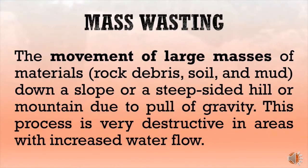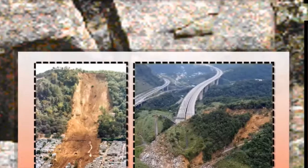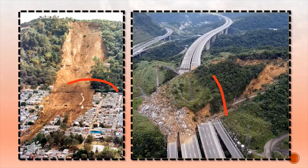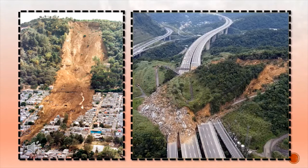The other exogenic process is mass wasting — the movement of large masses of materials such as rock debris, soil, and mud down a slope or steep-sided hill or mountain due to the pull of gravity. This process is very destructive in areas with increased water flow, and this phenomenon may cause damage to a large-scale area, just like what happened in Itogon during the onslaught of Typhoon Ompong.